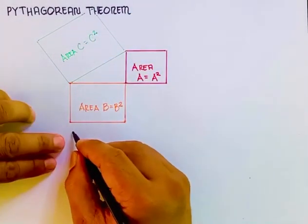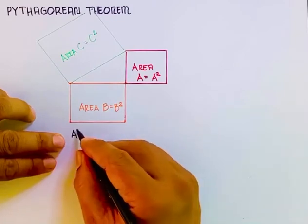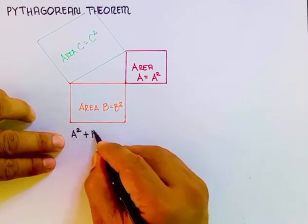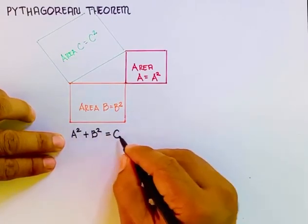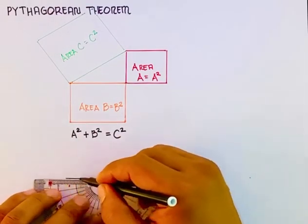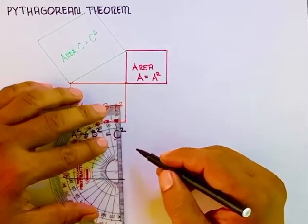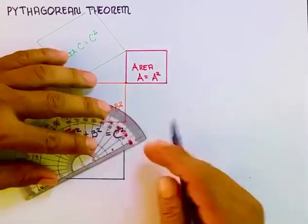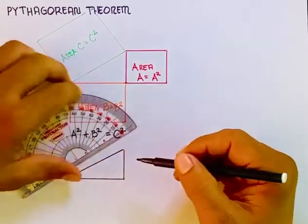You see that both Area A and Area B or A square plus B square, if you combine them, that will be the same area as Area C. So that is the principle of Pythagorean Theorem. That's the formula.